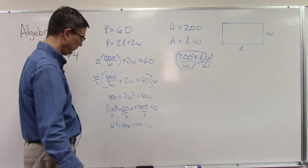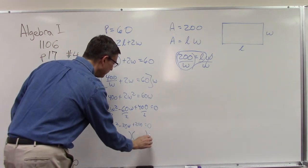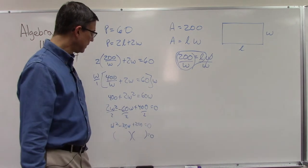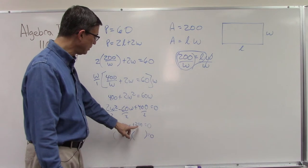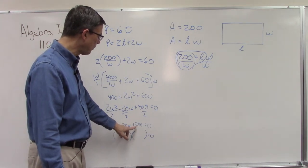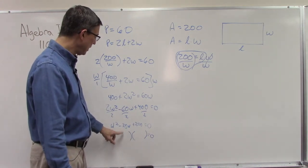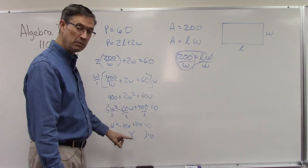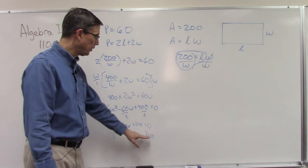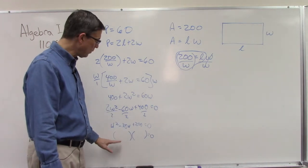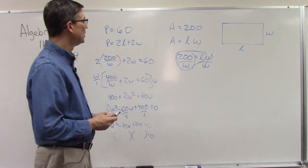Now we're going to set up two parentheses, and I'm going to let you finish this. Basically you're putting w in here, you're finding two numbers that multiplied together will give you positive 200, and that'll give you two numbers that when you add them will give you negative 30 in the middle. Then you set each of these equal to zero, and we can get two different values for w.